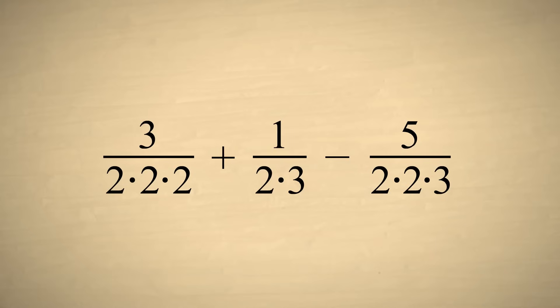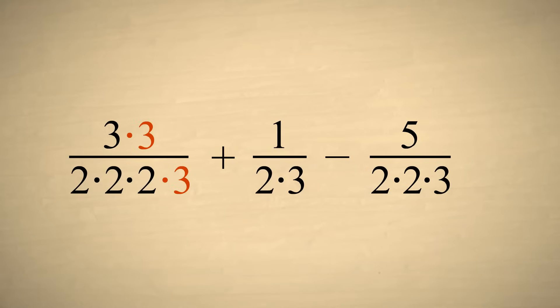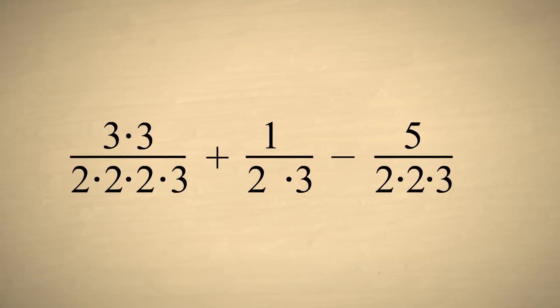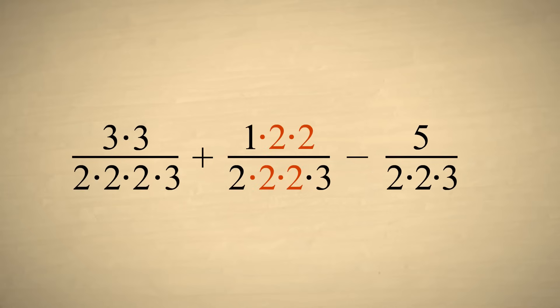We can see that to make these denominators the same, we need to add a factor of three to the first denominator, and two factors of two to the second denominator.